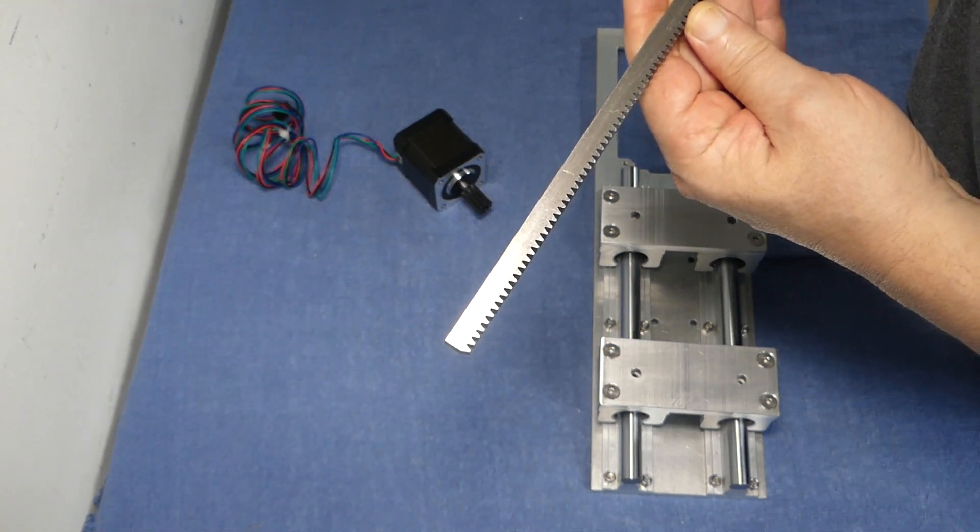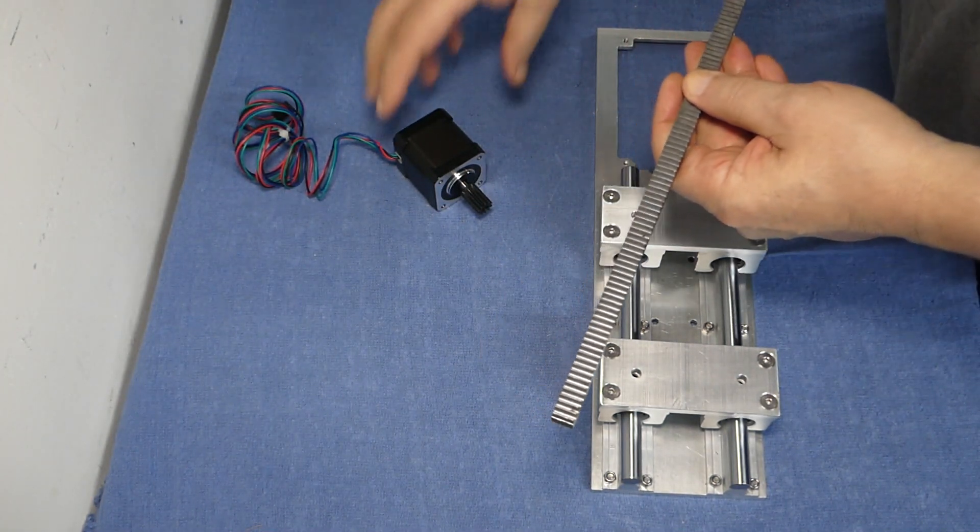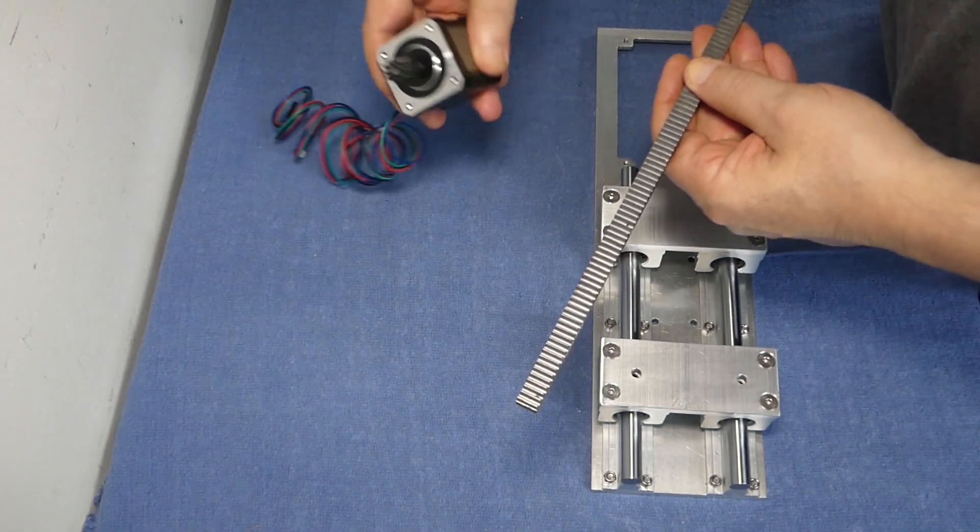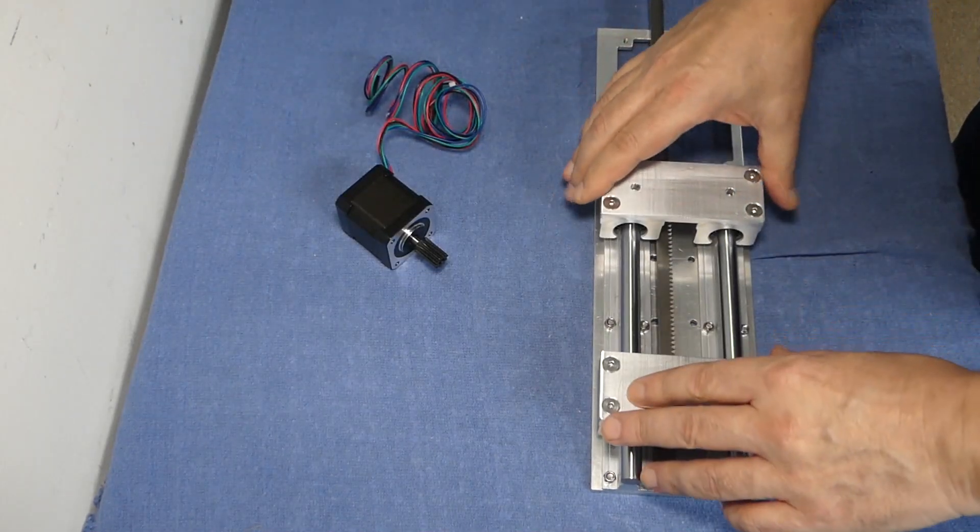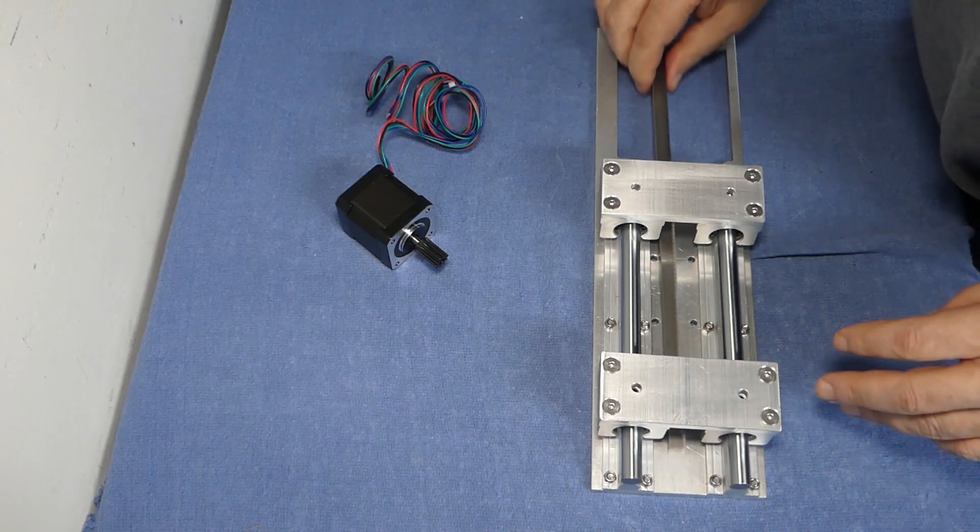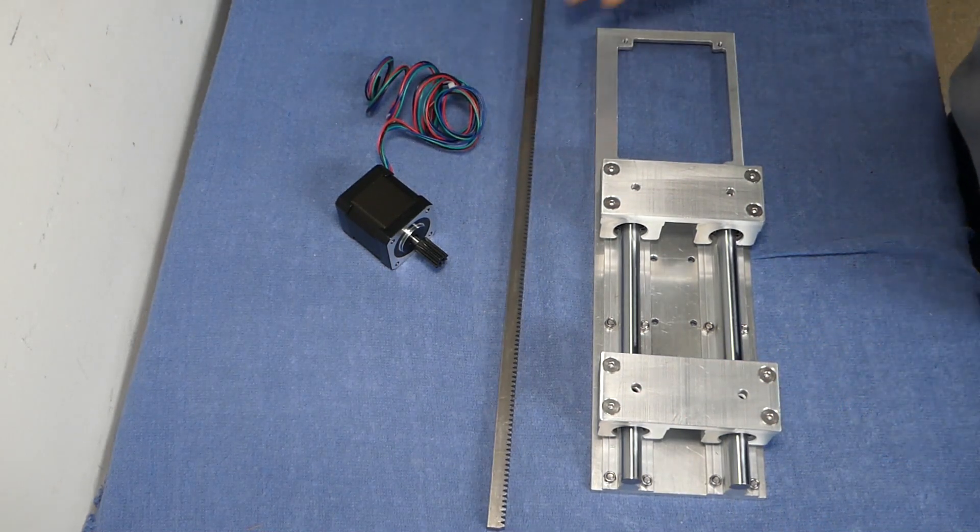For now I'm using the old NEMA 17 motors I got from eBay, but in the end they will be replaced by Moon's NEMA 17 steppers with higher torque and dual shafts. This offers better holding force and allows me to add a sensor to the opposite shaft. This gives me more options I may think of later.